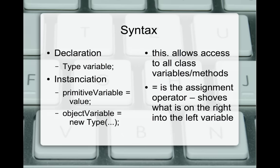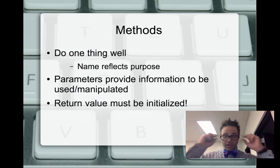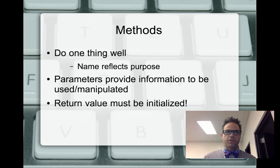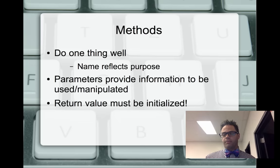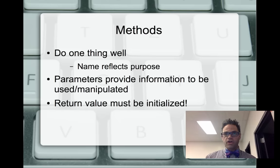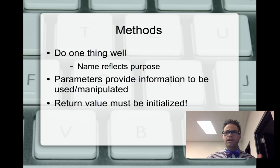Methods are going to do just one thing well. We want methods that operate cleanly, and the name should reflect the purpose. The parameters used inside a method are designed to be used and manipulated. This especially applies on the free response: if you are given parameters, use them. They are there to help you solve the problem — they're information provided for you to actually use.